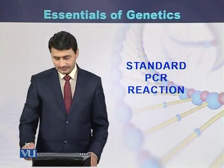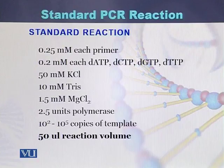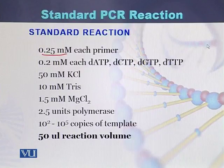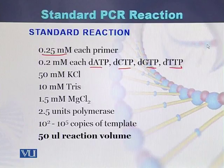For preparing a standard PCR reaction of 50 microlitre, the main ingredients required include 0.25 millimolar of each primer, and 0.2 millimolar each of the dNTPs. There are four types of trinucleotide phosphates: adenine, cytosine, guanine, and thymine trinucleotide phosphates — 0.2 millimolar each of the dNTPs.